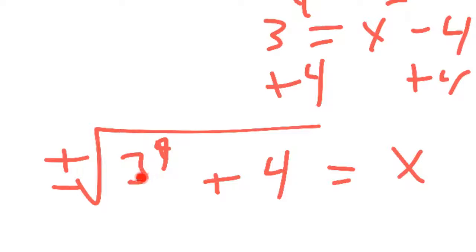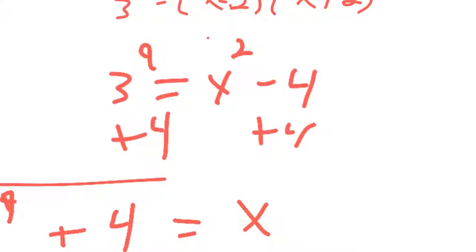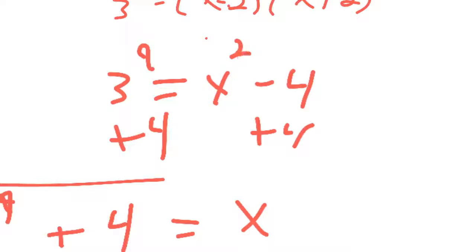And I have positive or negative because 3 to the 9th plus 4, then you take the square root. So whatever that number is is your answer, then the negative number is also going to be true because if you plug it in here, it's getting squared, which makes it be positive.